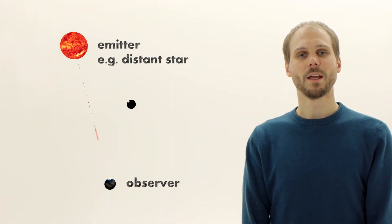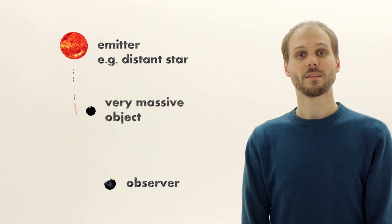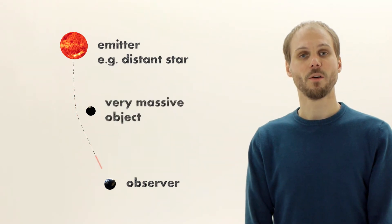From our experience we know that light travels along straight paths. However, light gets deflected by the gravitational field of massive objects. Then, according to Newton's action equals reaction, light must also be the source of a gravitational field.